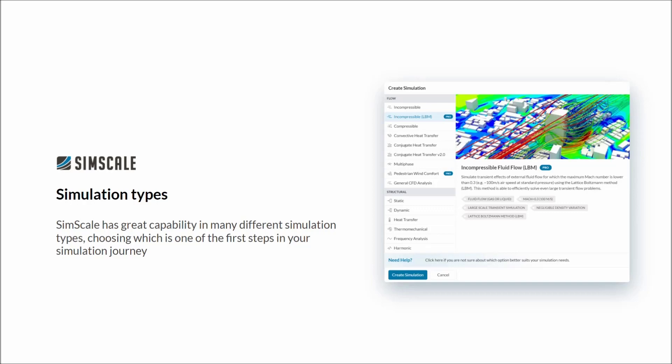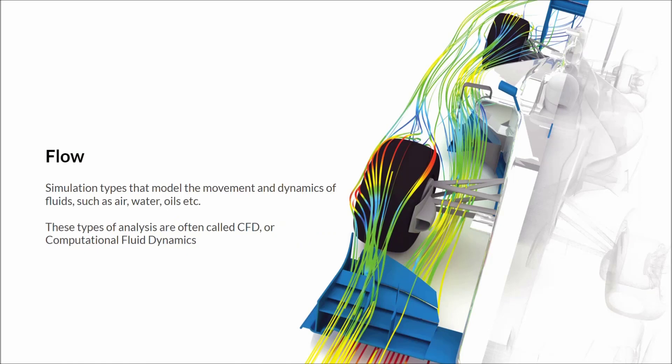Our simulation types can be broken down into two major categories. The first is flow modelling. These simulations model the movement and dynamics of fluids, for example water, air and oils.